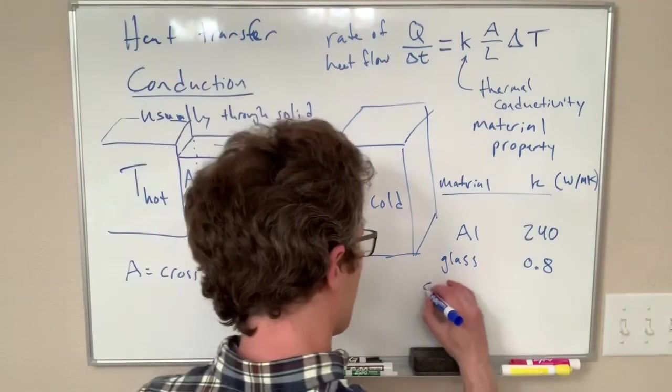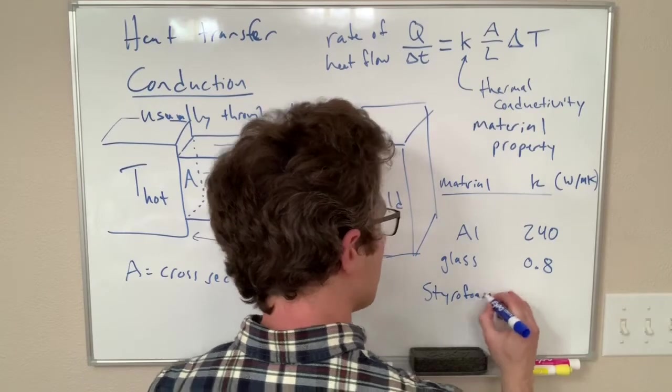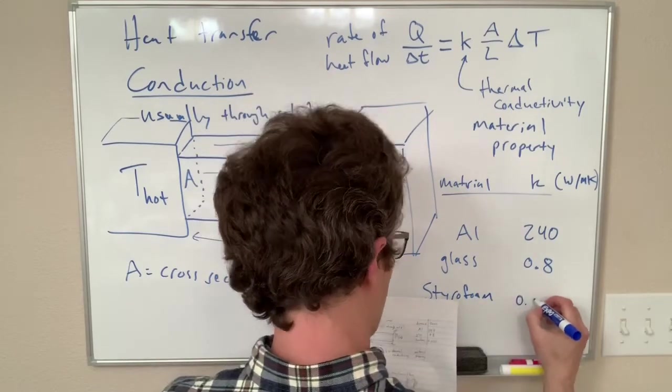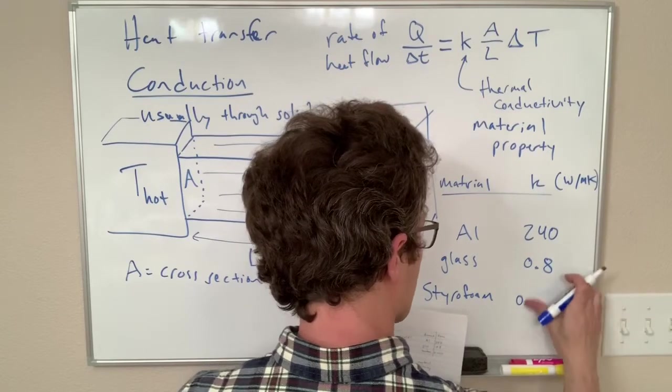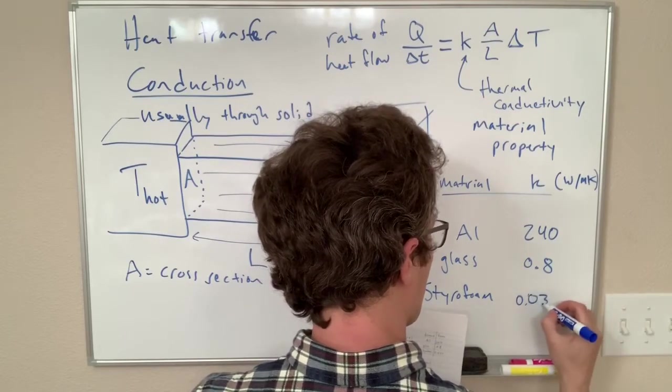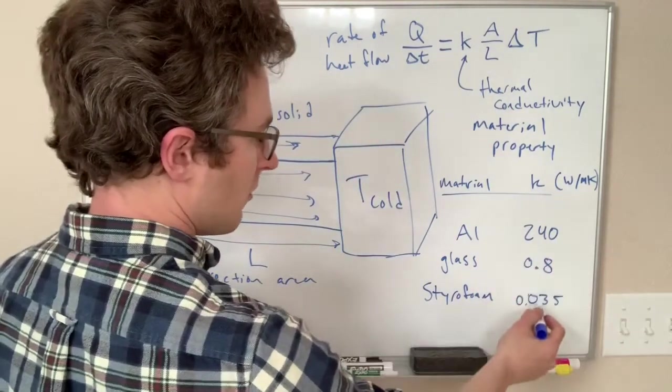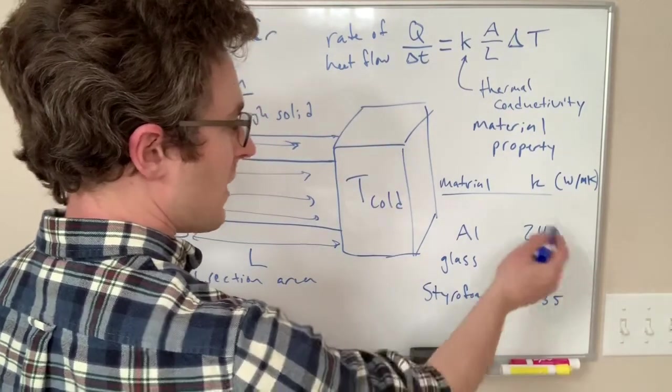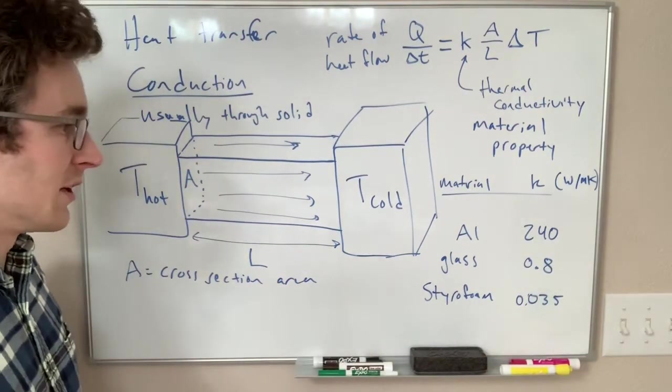Styrofoam is a really good thermal insulator, it is much better than glass—0.035. So that's less than a twentieth as conductive as glass and that's like four orders of magnitude less than aluminum. Styrofoam is a good thermal insulator, that's why they make coolers out of it.